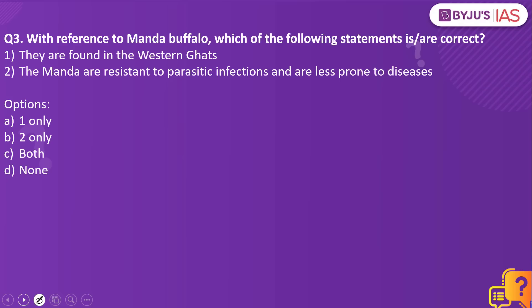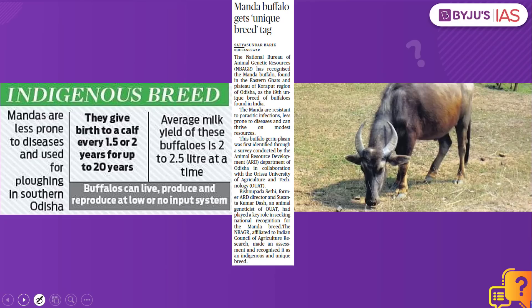Now let's look into the next practice question. With reference to Manda Buffalo, which of the following statements is/are correct? One: they are found in the Western Ghats. Two: the Manda are resistant to parasitic infections and are less prone to diseases. Which of the statements are correct?